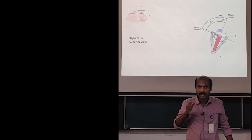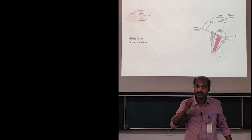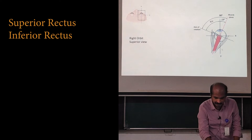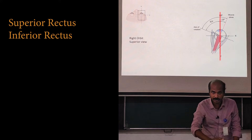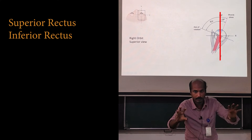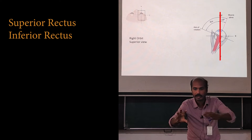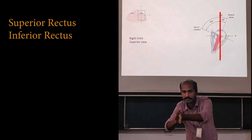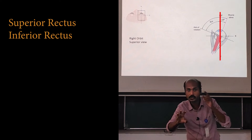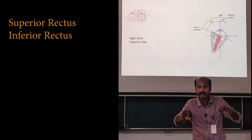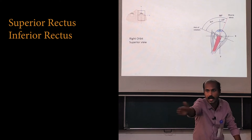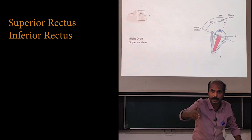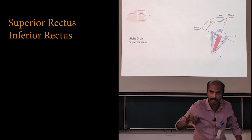Next, we are going into the action of the superior rectus. You can see here that this is the primary gaze axis — the visual axis. When both eyeballs are looking straight, the axis of vision is like this, but the superior rectus line of pull is 23 degrees outwards to the line of primary gaze of the eyeball.